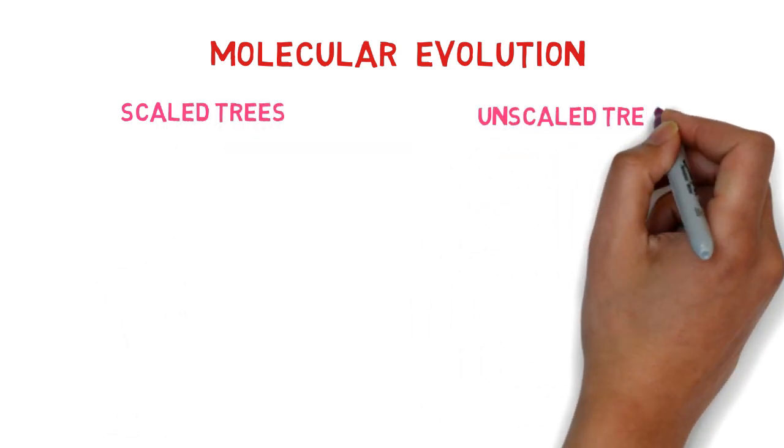The following are the types of phylogenetic trees: scaled trees and unscaled trees.